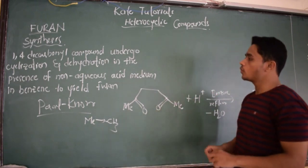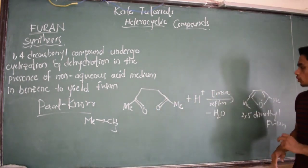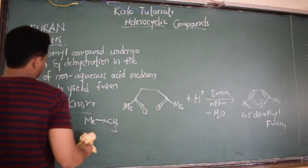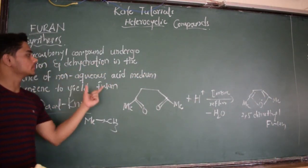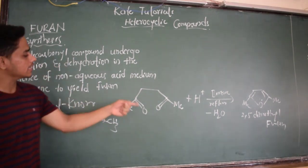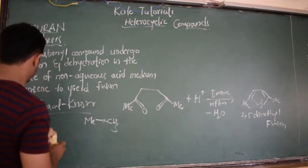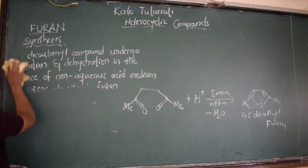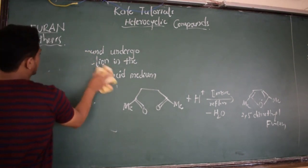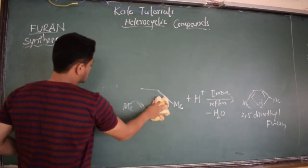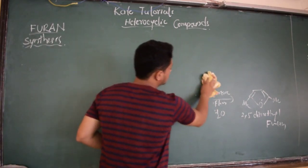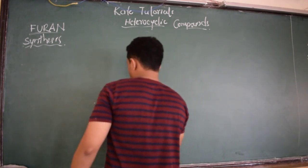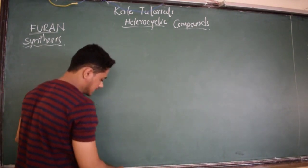This is how we synthesize furan. We need to know its mechanism. If you write the definition and the reaction, you will get 1 mark, and the other 4 marks are for the mechanism. To write the mechanism I need space. Writing mechanism is easy in organic chemistry.